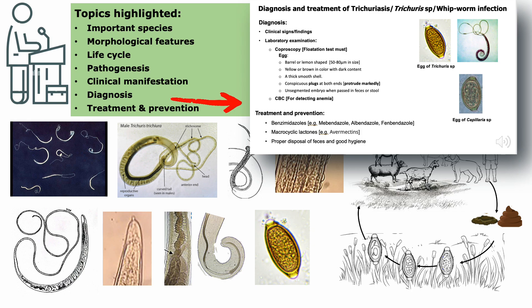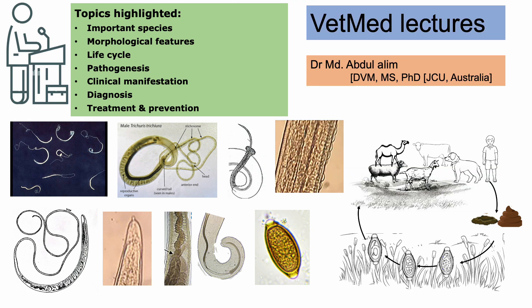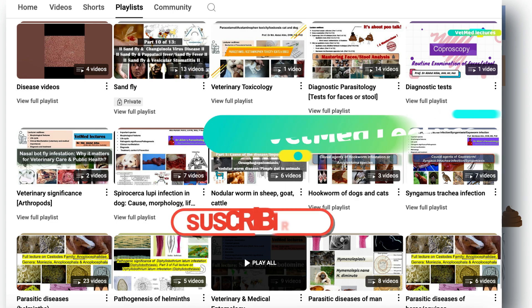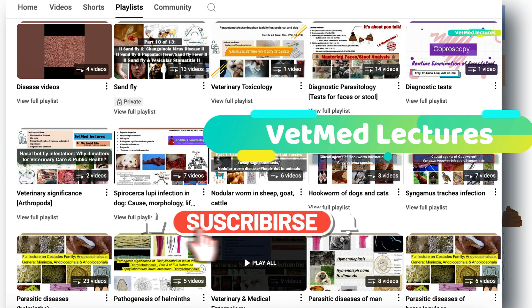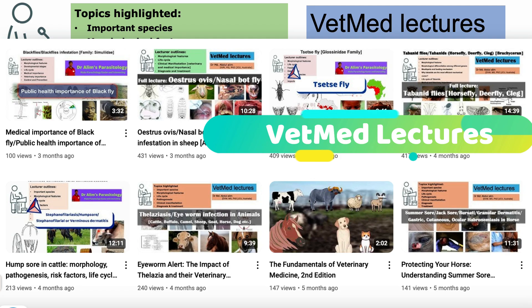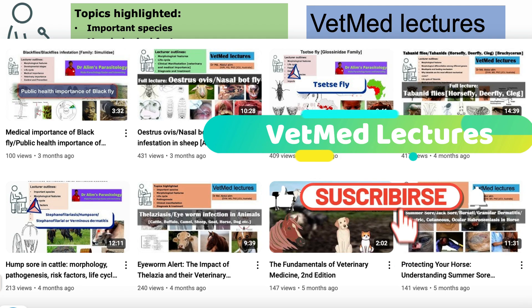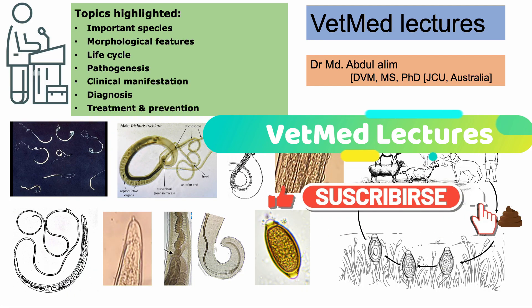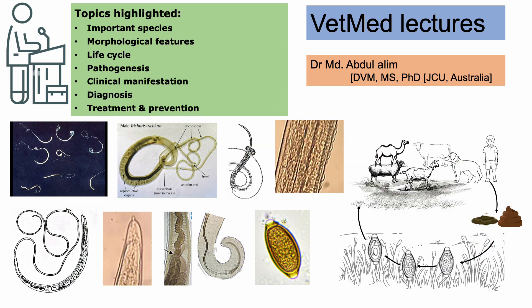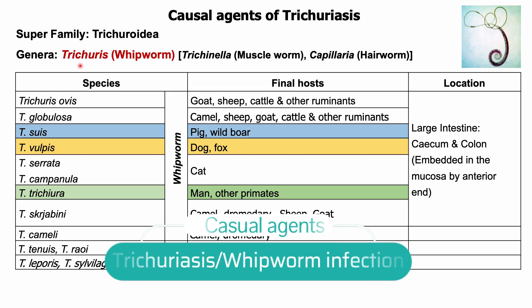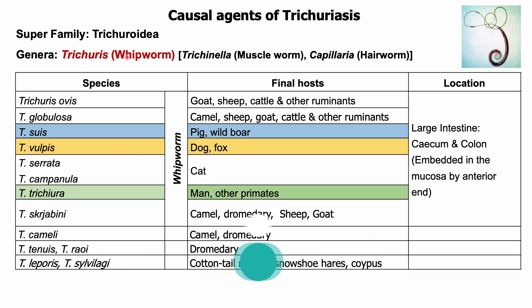Follow my channel's playlist to get more video lectures on veterinary parasitology. Stay connected with the channel Vet Med Lectures to get more video lectures on different subjects of veterinary medicine. Under the genus Trichuris, there are three genera under the superfamily Trichuroidea: Trichuris, Trichinella, and Capillaria.